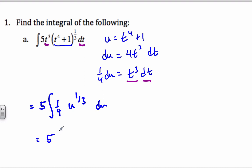And so I now have 5. I add 1 to my exponent, which is 4-thirds. Multiply by the reciprocal. Times it by the 1-quarter. And I will do plus C.